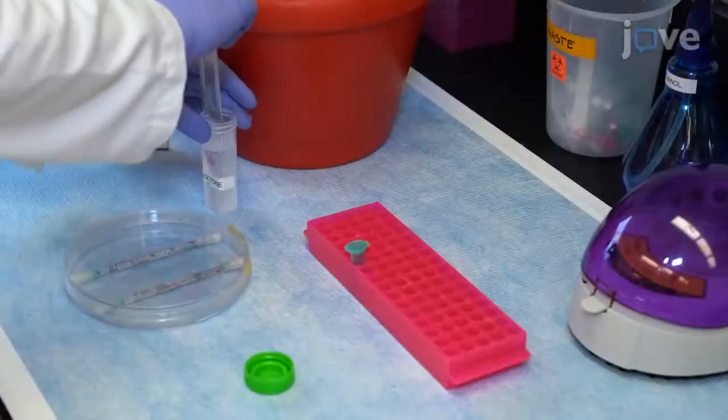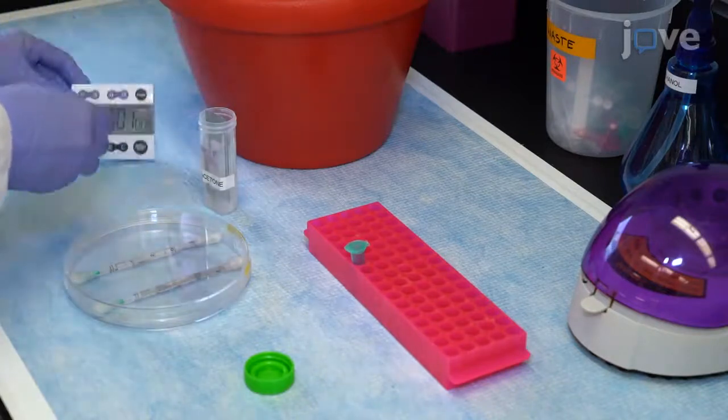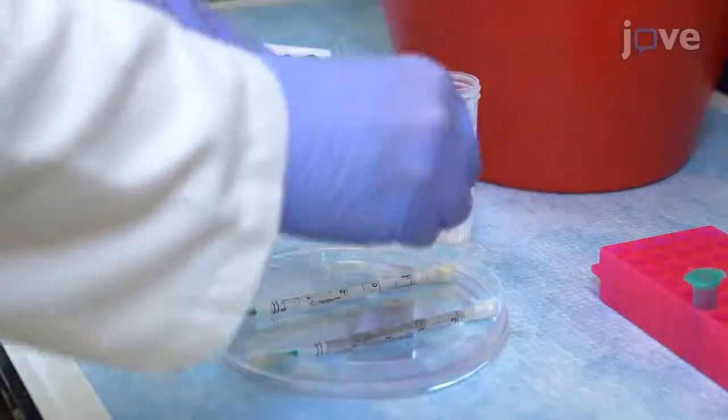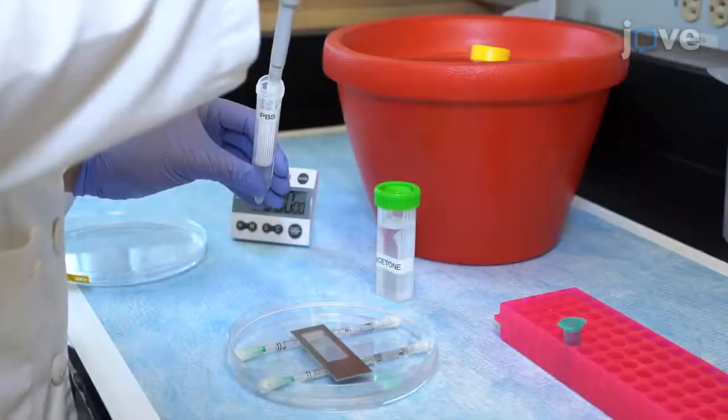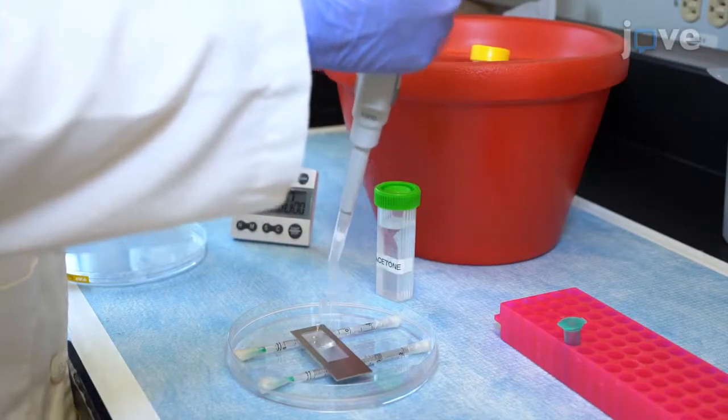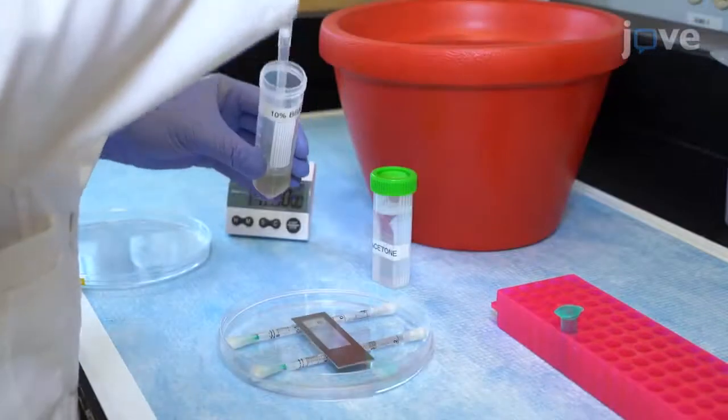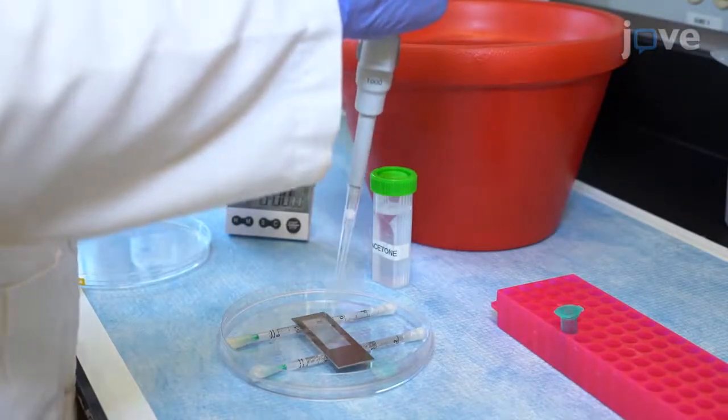Wash the slide in minus 20 degrees Celsius 100% acetone for one minute and place the slide in a humidity chamber. Wash the top of the slide two times with fresh RNase-free PBS for 30 seconds per wash, followed by two 30-second washes with 10% BSA in RNase-free PBS.